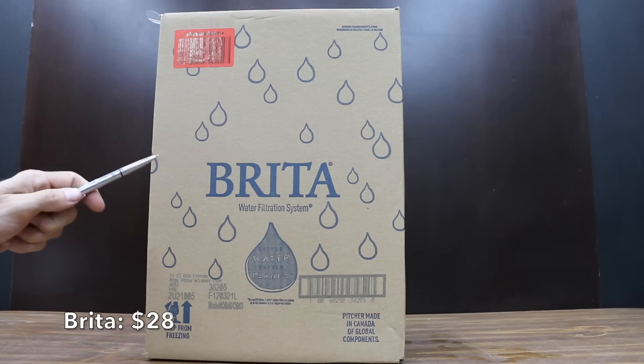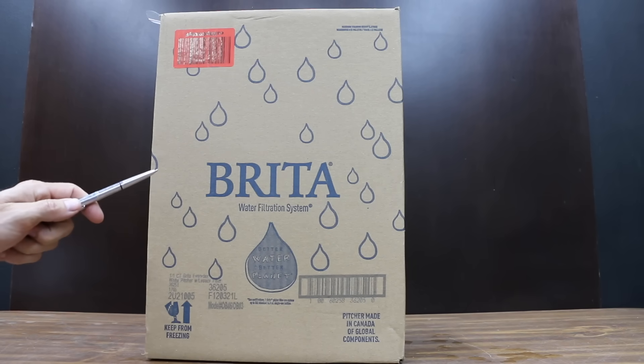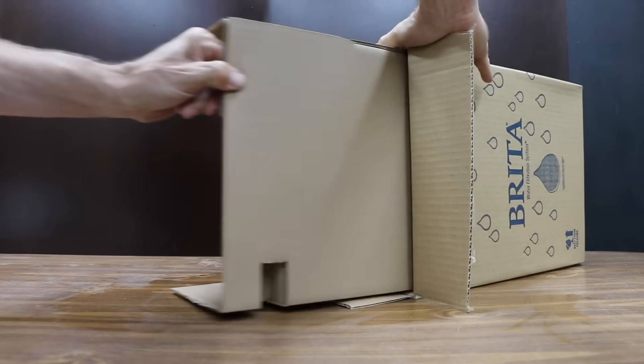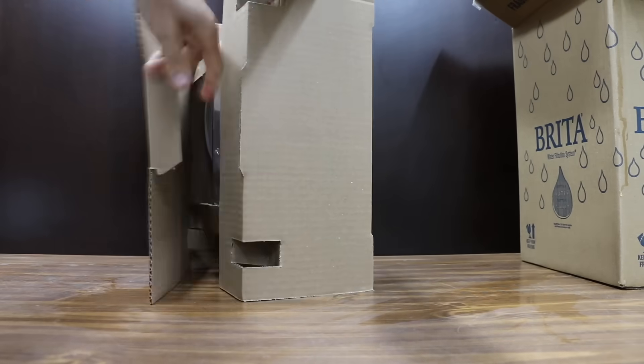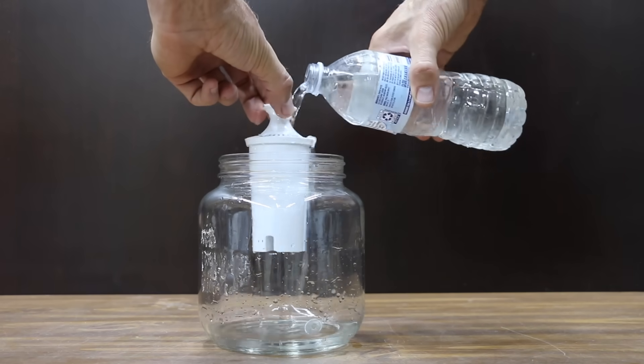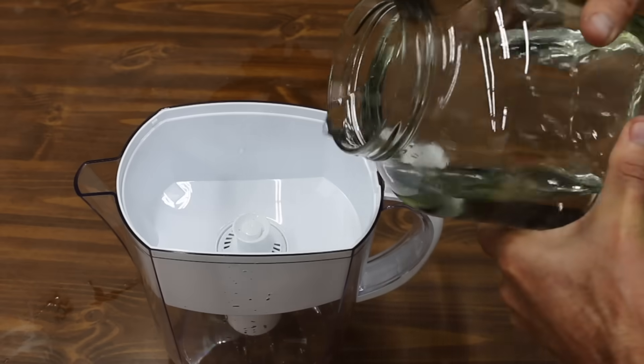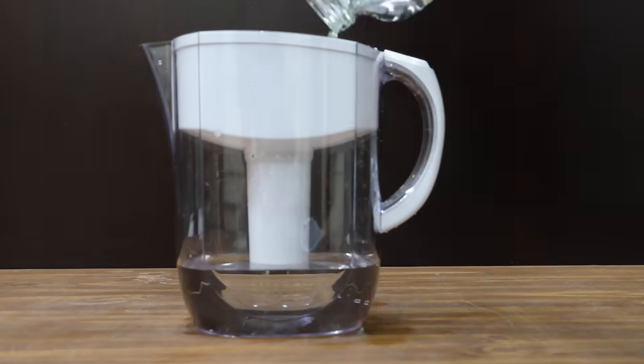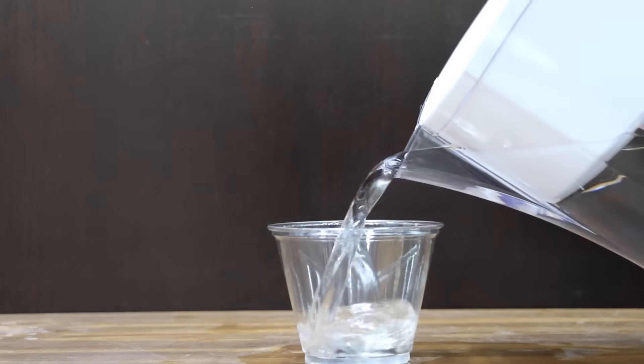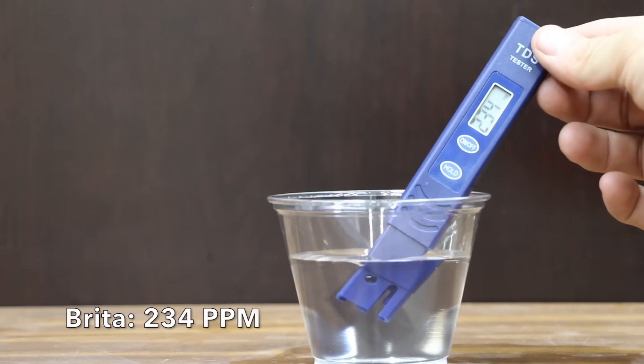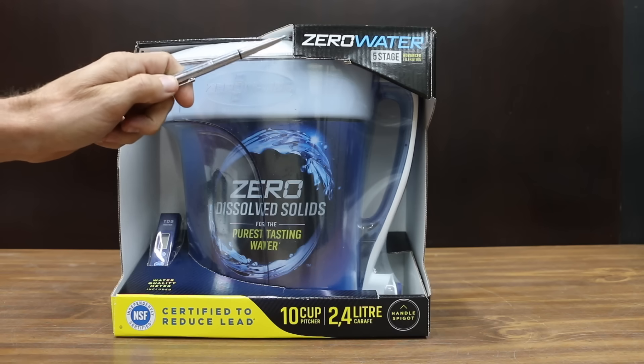Also at a price of $28, the same price as the Pure brand is this Brita filter. Brita is the number one water filter reducing chlorine, mercury, copper, zinc, and cadmium. Rinse with cold water for 15 seconds before using. Carbon dust is normal for the first one to three fillings. The pitcher is made in Canada of global components. And the Brita performed nearly the same as the Aquaphor at 234 parts per million.